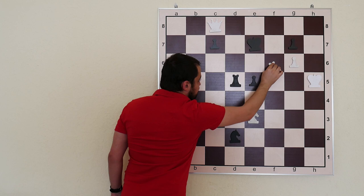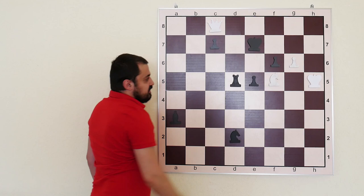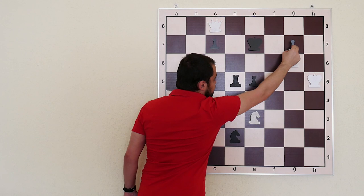If Black takes gxf6, now Knight f5 is mate. So we are taking under control the d6 square with the Knight, and also the pawn is taking the important square f6.